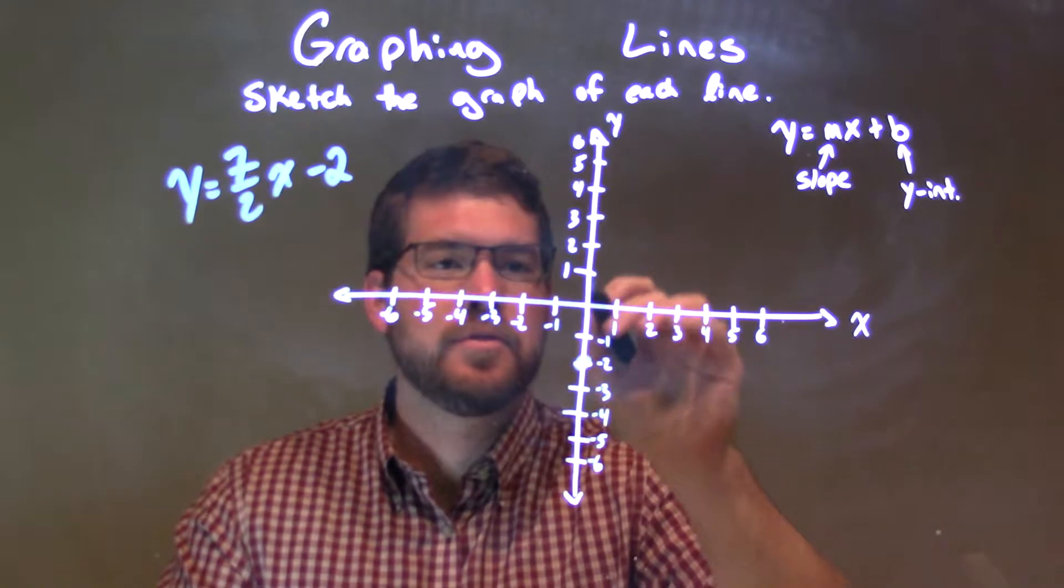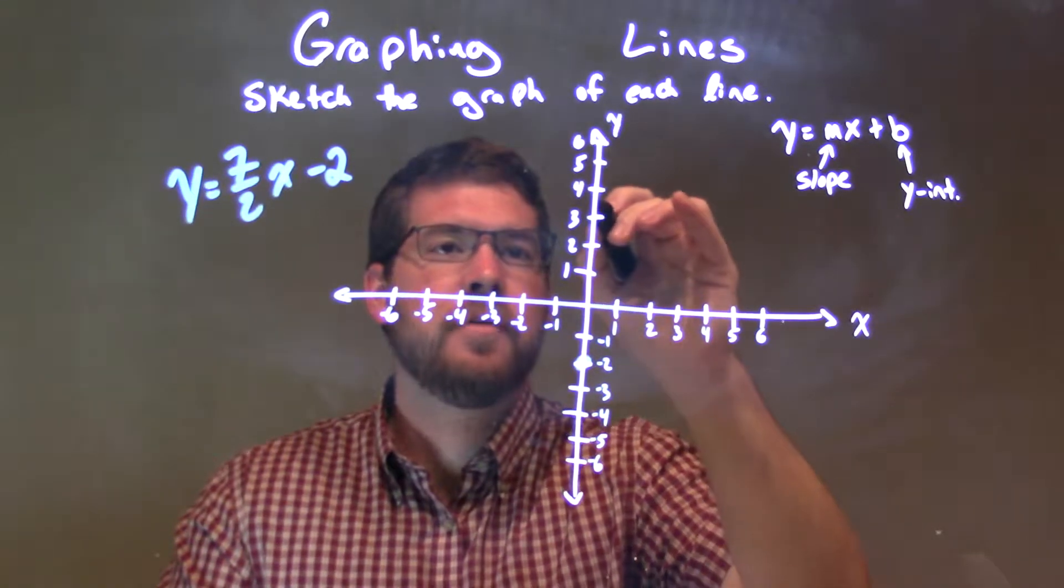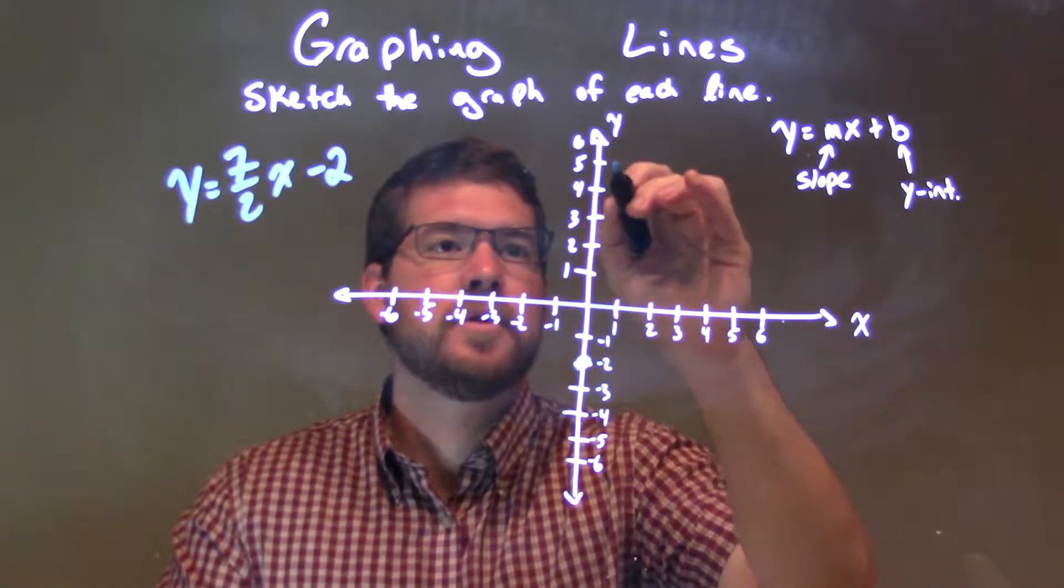So we go up 7 units, 1, 2, 3, 4, 5, 6, 7, over 2 units, 1, 2.